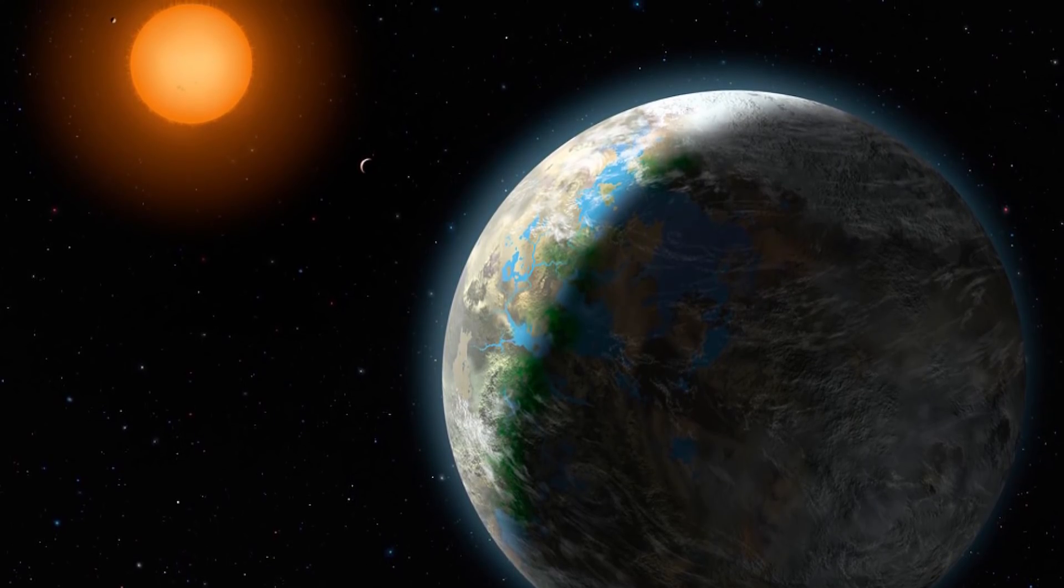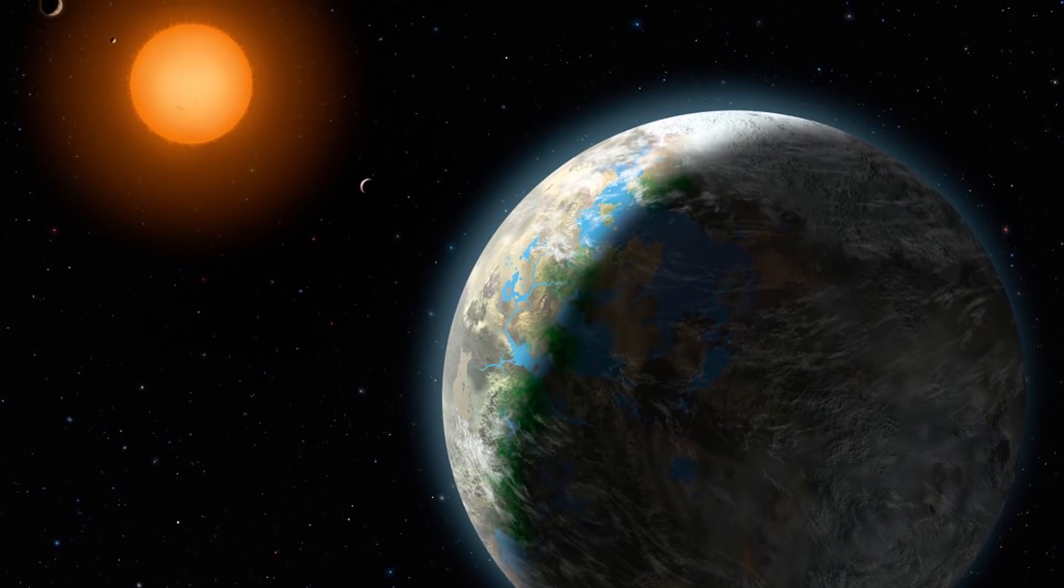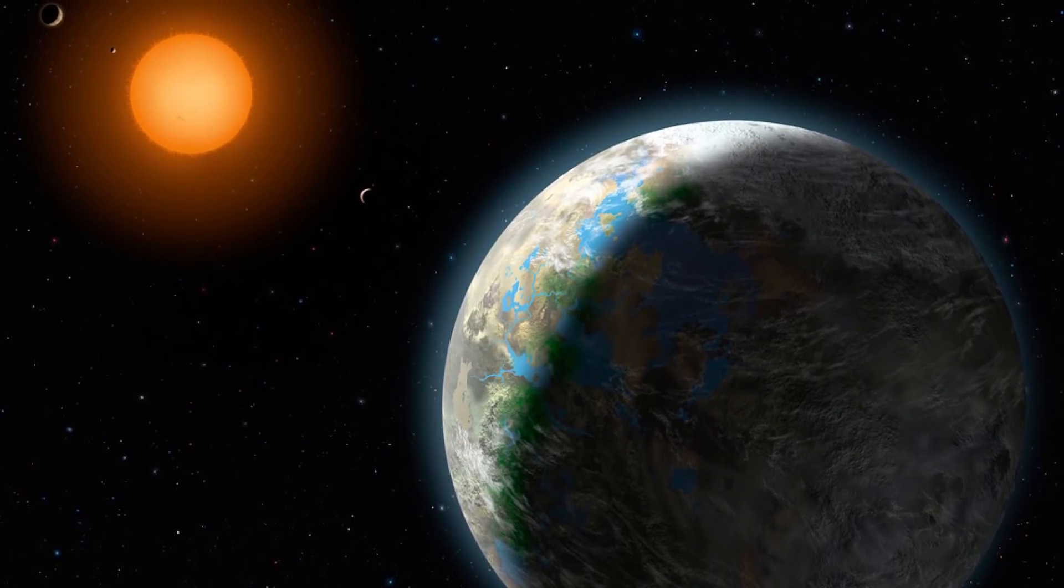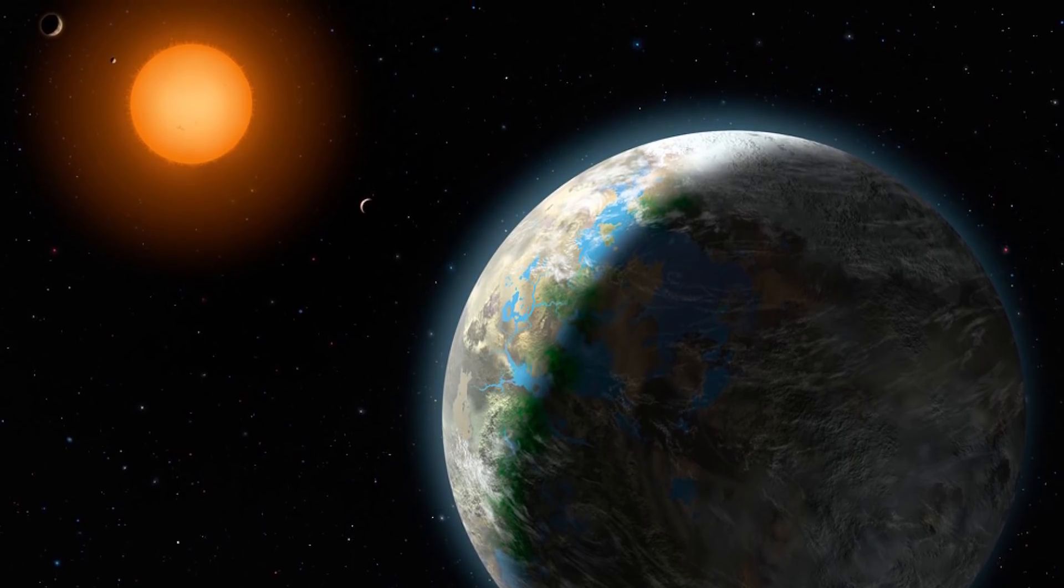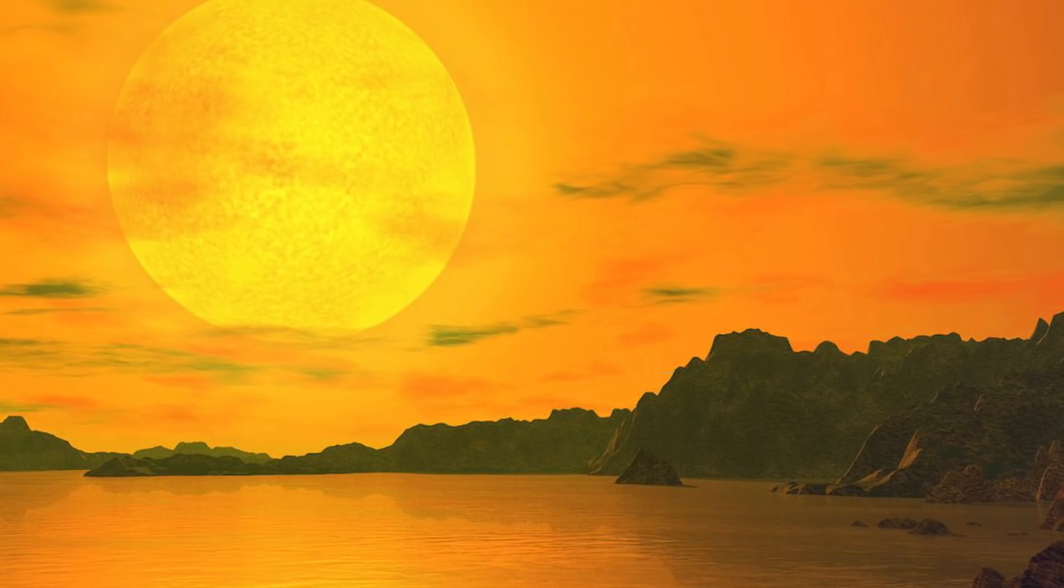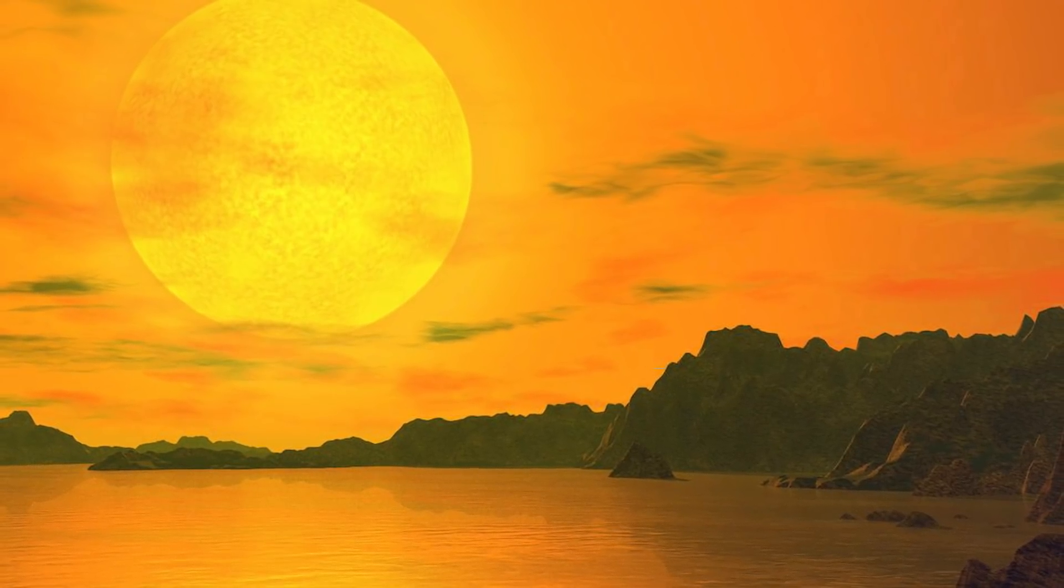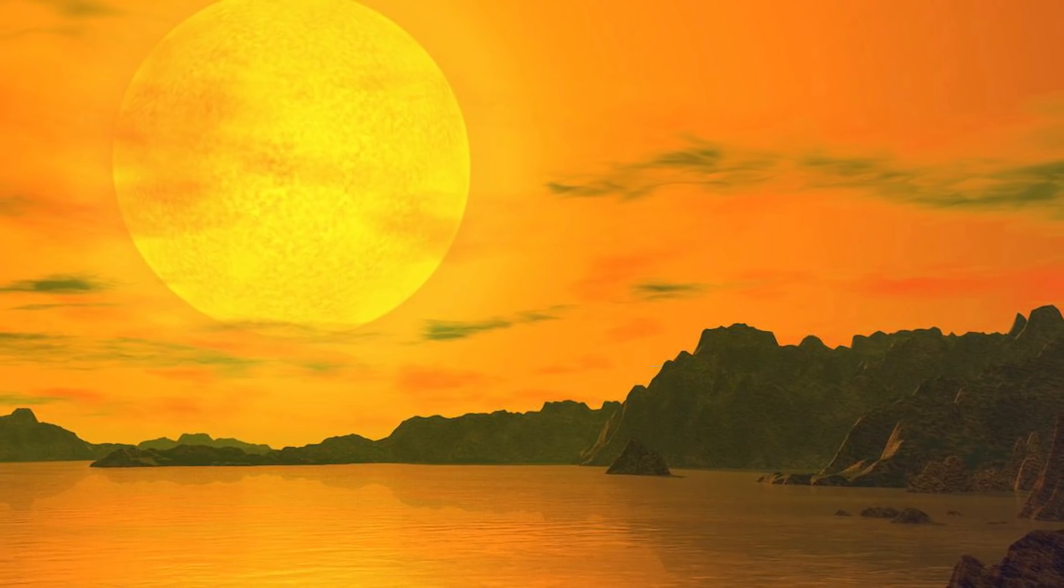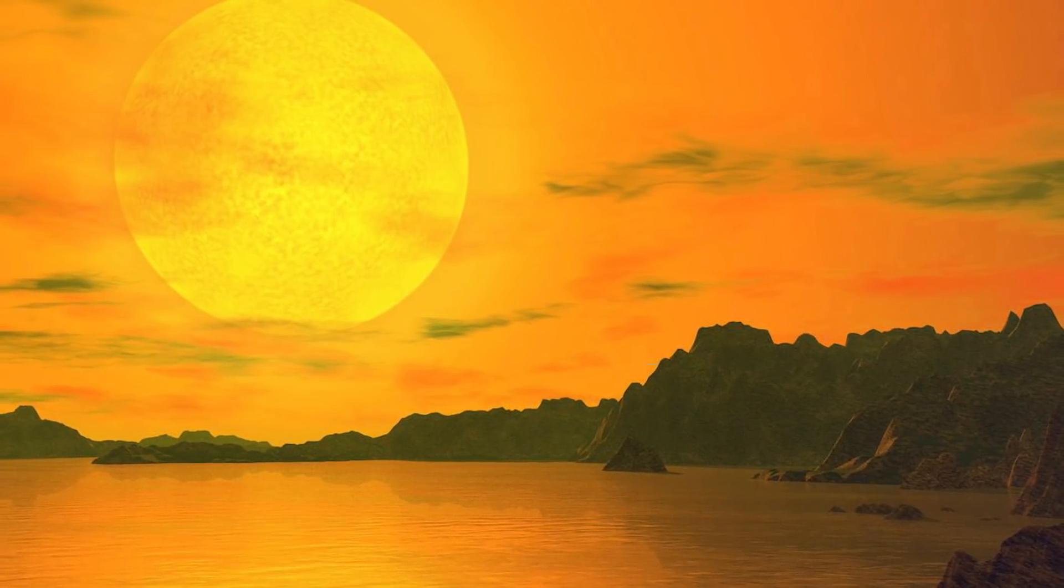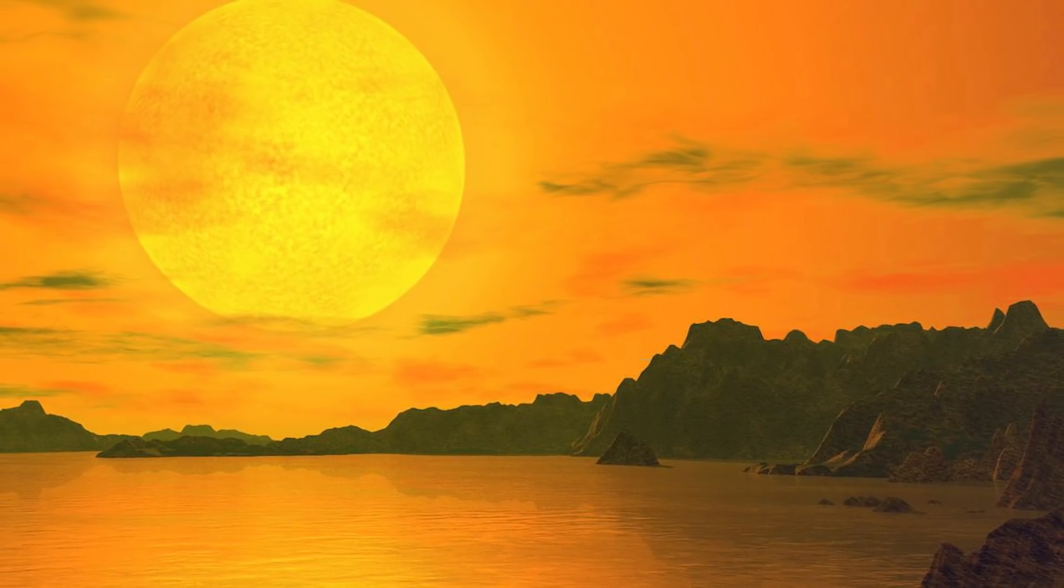But the more scientists learned about this distant planet, the more they began to realize what a hellish landscape it really is. Firstly, the planet is tidally locked, meaning that it always presents the same side to the star that it orbits, like our moon does to the Earth. This results in a planet split in two, with one half constantly beaten by the heat of its parent star, and the other half submerged in perpetual sub-arctic darkness.